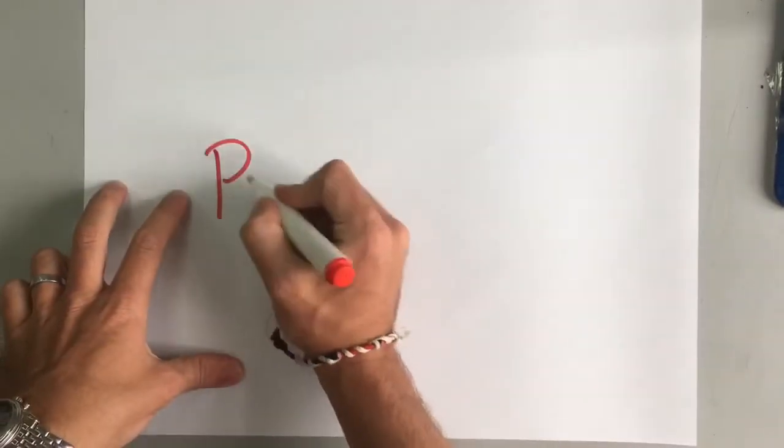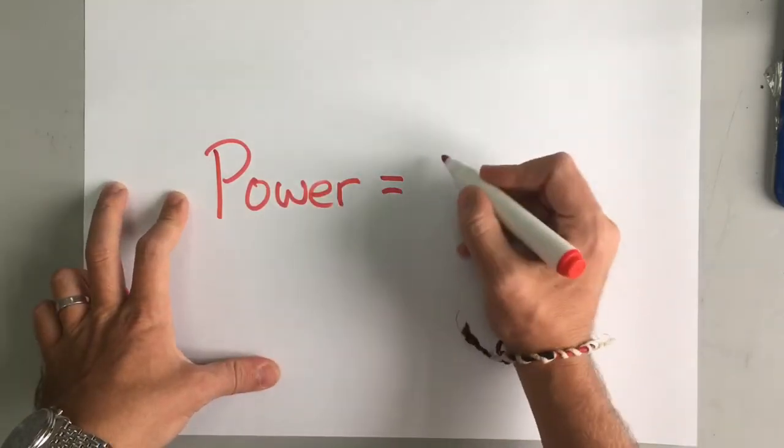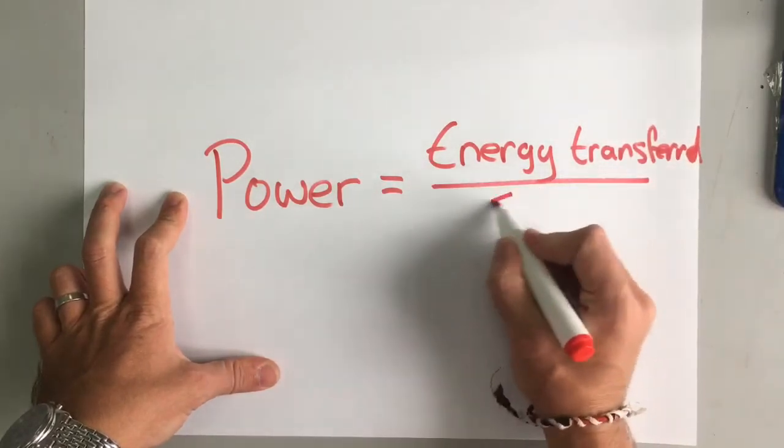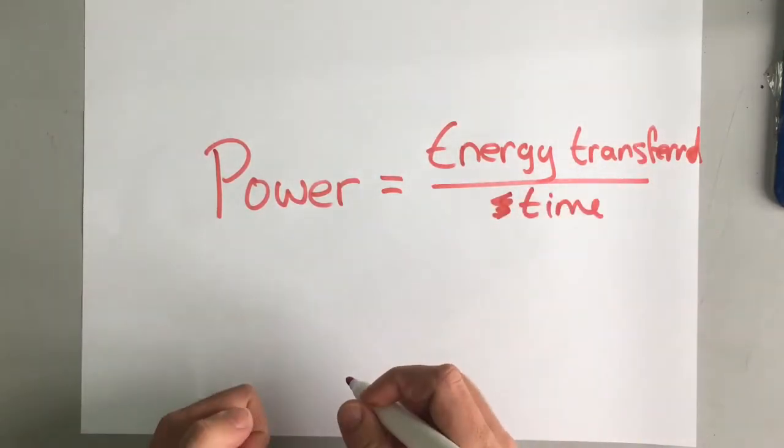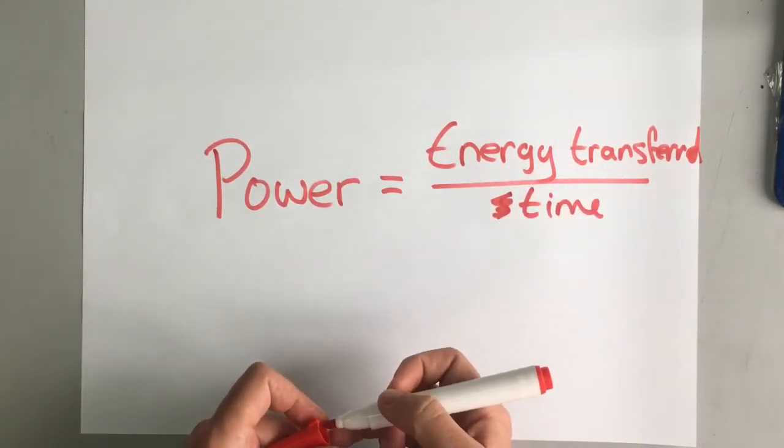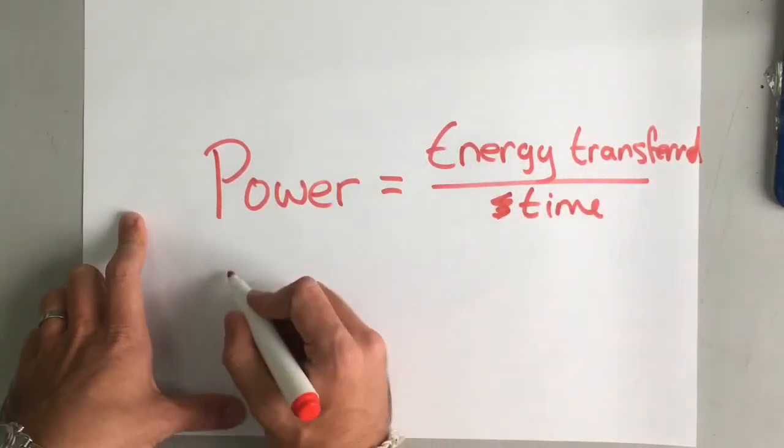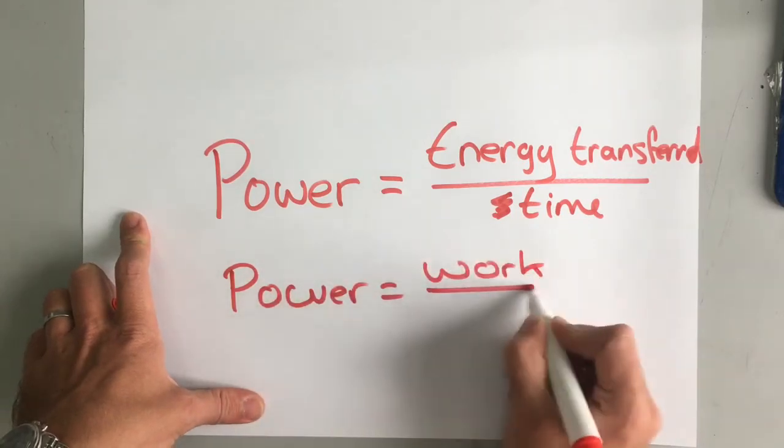Now we often talk about something being powerful. A computer is powerful or a person is powerful. Now in physics, power is the amount of energy you can transfer every second—the amount of energy transferred per second or per unit of time. Now we've just found out that energy transferred is the same as work. So power also equals work done over time.